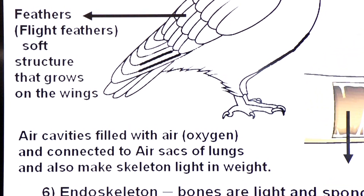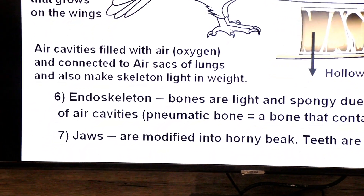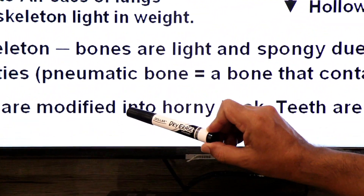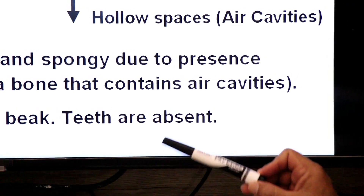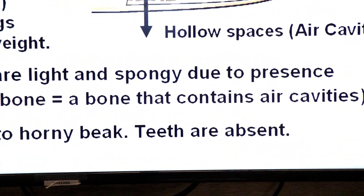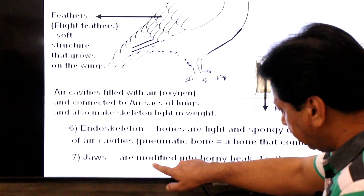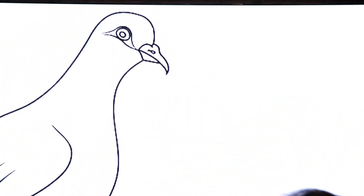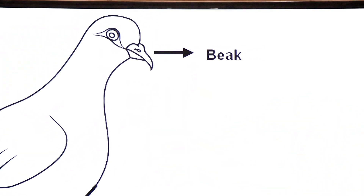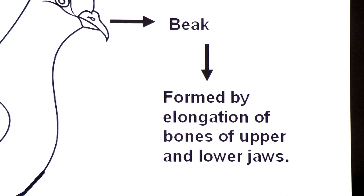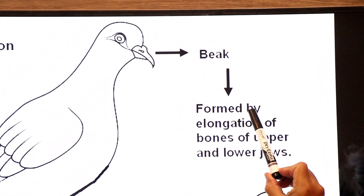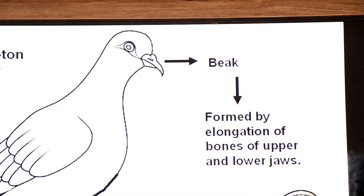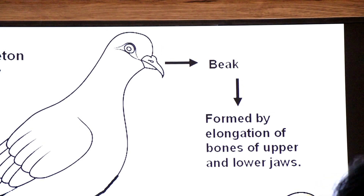Birds have jaws, but no teeth. Their jaws are modified into a horny beak, and teeth are absent to reduce weight. The beak is formed by elongation of the bones of the upper and lower jaws, and it is used to get a variety of foods.